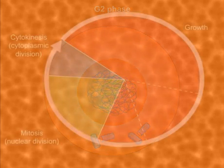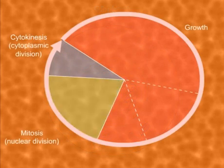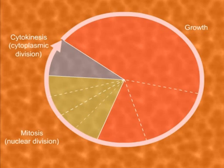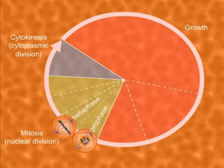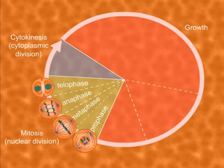Let us now look at the M phase. M phase, also known as mitotic phase, comprises four stages: prophase, metaphase, anaphase, and telophase. During these phases, chromosomes undergo many changes, and finally the genetic material splits equally.